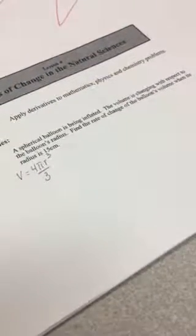Okay graduates, here we go. We're on lesson four, number one. It's talking about a spherical balloon, so that's just a balloon, round. The volume is changing with respect to the balloon's radius. Find the rate of change of the balloon's volume when its radius is 15.